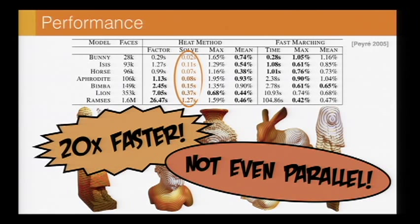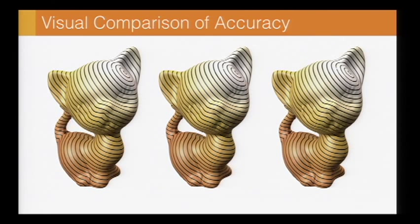And so again, you could get even more speed up by plugging into just a standard parallel linear solver. Whereas if you want to parallelize fast marching, especially for something like an unstructured mesh, it becomes very challenging.